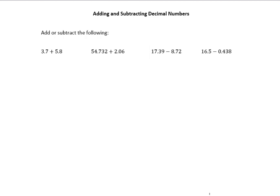In this lesson we're going to talk through how to add and subtract decimal numbers. So let's start with the example on the left. We're simply adding 3.7 and 5.8.